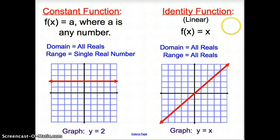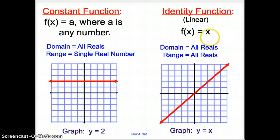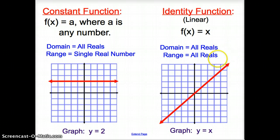Next is the identity function, which you've all seen before — y equals mx plus b — except we don't have a b. It's just f of x equals x. Your domain is all reals, your range is all reals. So if your graph was y equals x, your graph would just look like this.